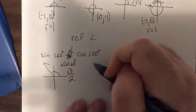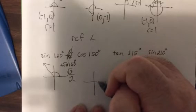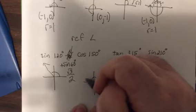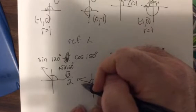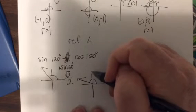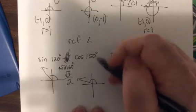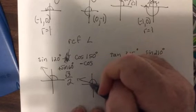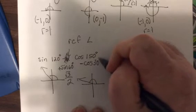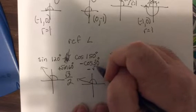So cosine. Cosine, we're in the second quadrant again. So cosine, this is x is negative, y is positive, cosine is x over r, negative over positive is negative. And the reference angle is 30 degrees, and we all know that the cosine of 30 is square root of three over two, so the answer would be negative square root of three over two.